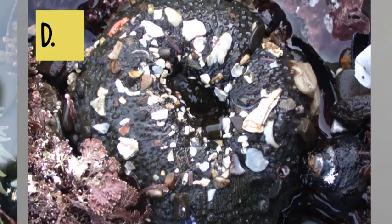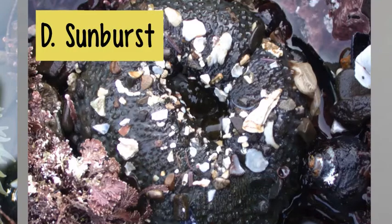Now here's a little trickier one. What do you think this one is? This is the sunburst anemone. Since it's closed and has shells on it, it's a little hard to see, but it has the tubercles — those raised bumps in columns and rows surrounding the body — and it also doesn't have a flaring base.